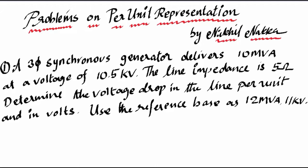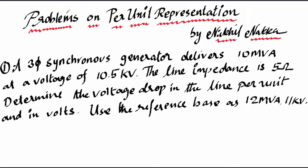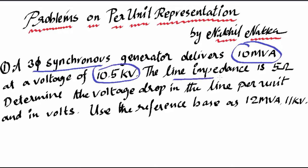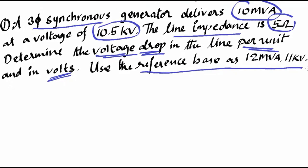Hello my dear friends and students, this is Nikhil again. In this video I am going to discuss dealing with problems in per unit system for power systems. I have taken a problem: a three-phase synchronous generator is delivering 10 MVA at a voltage of 10.5 kV, and the line impedance is given as 5 ohms. We need to find the voltage drop in the line in per unit value as well as in actual volts. The given base values are 12 MVA and 11 kV.